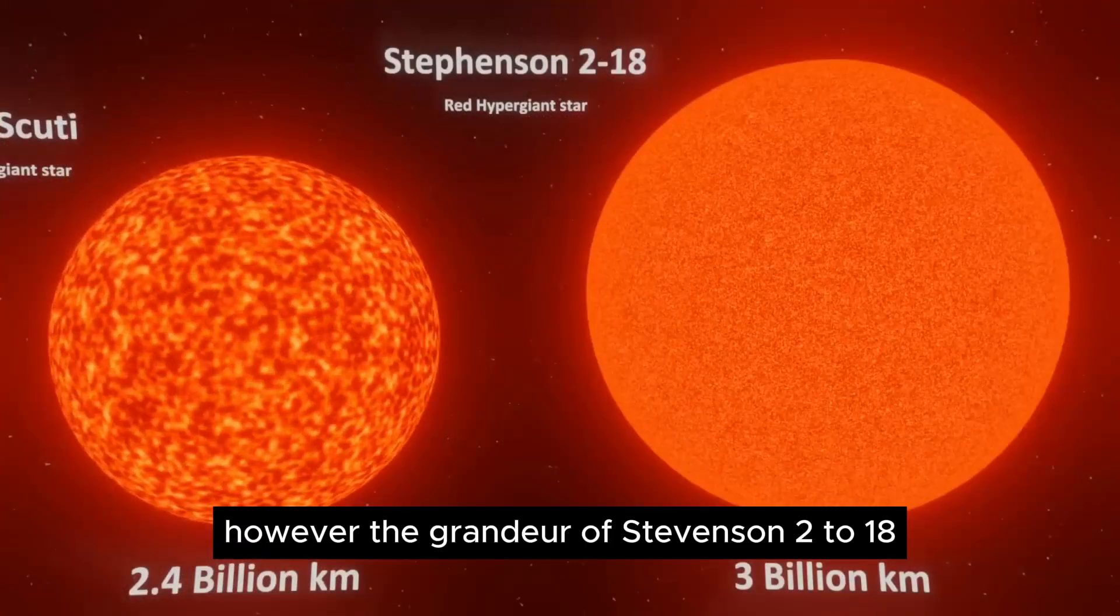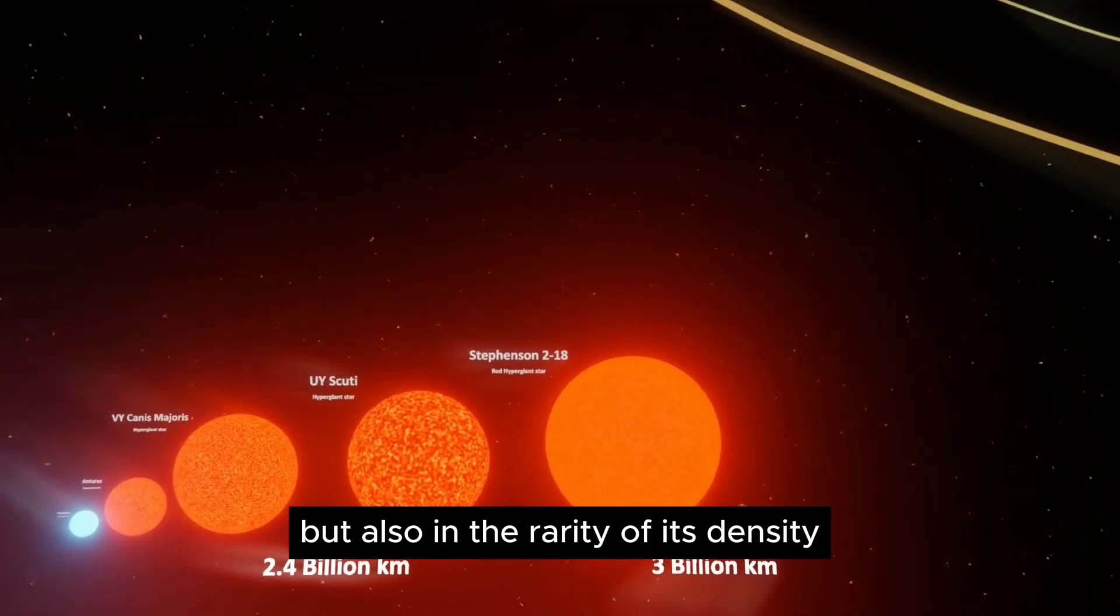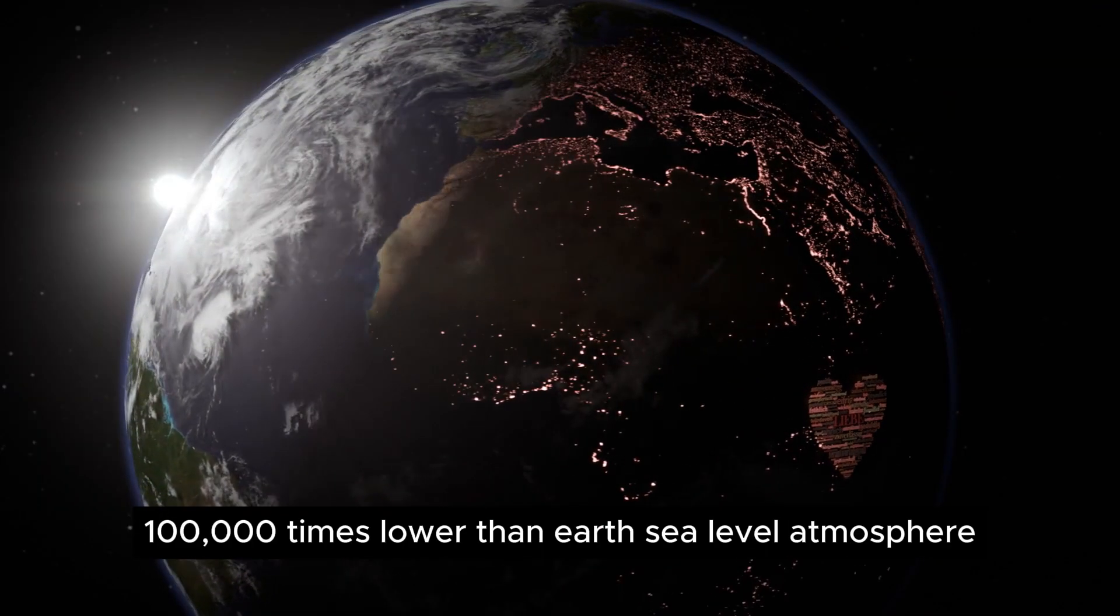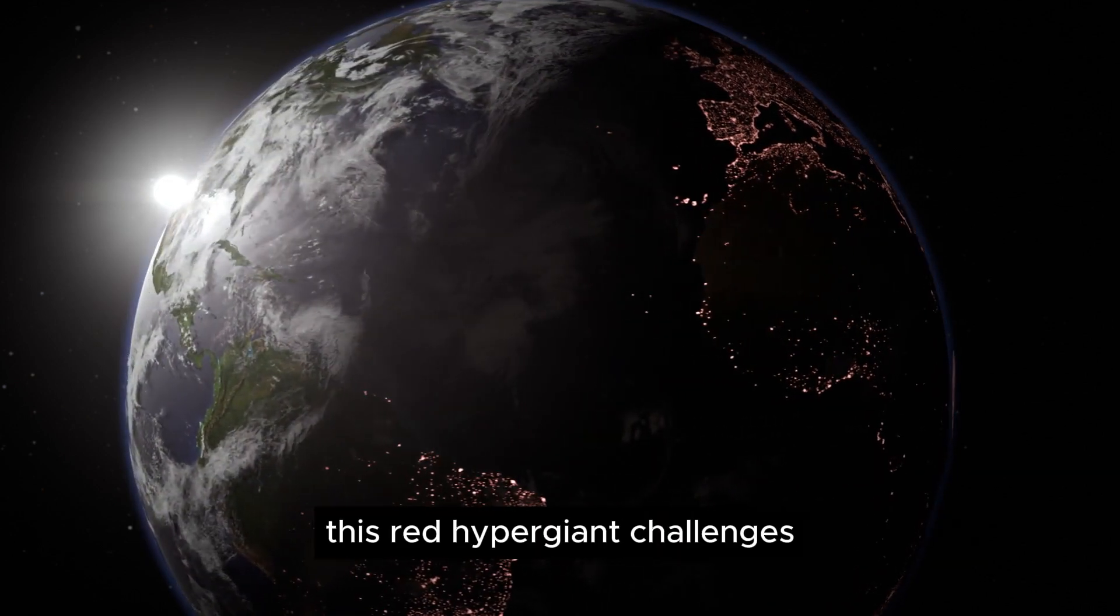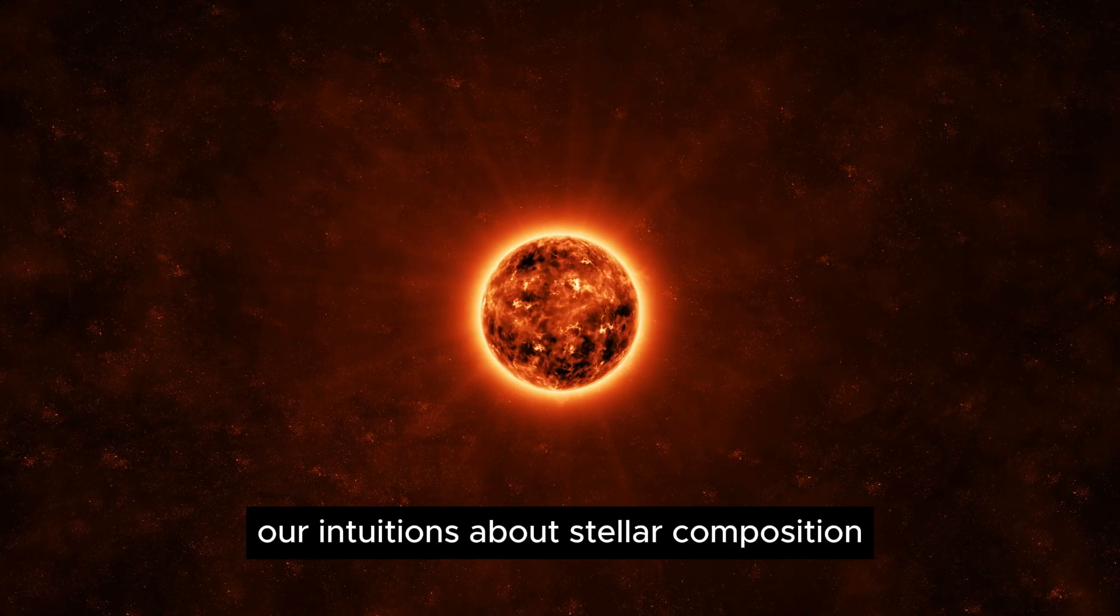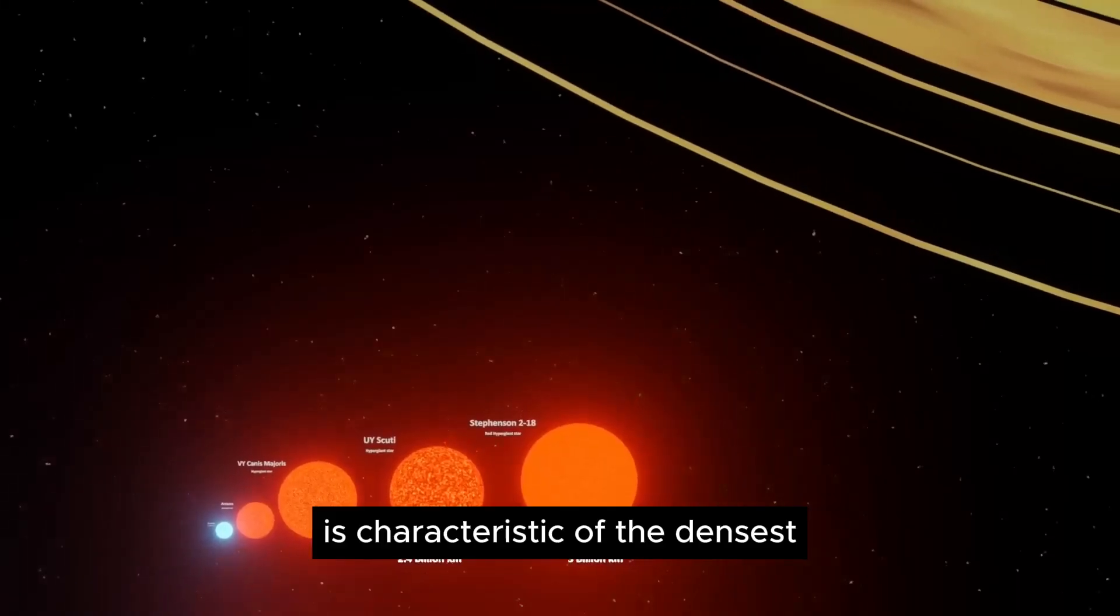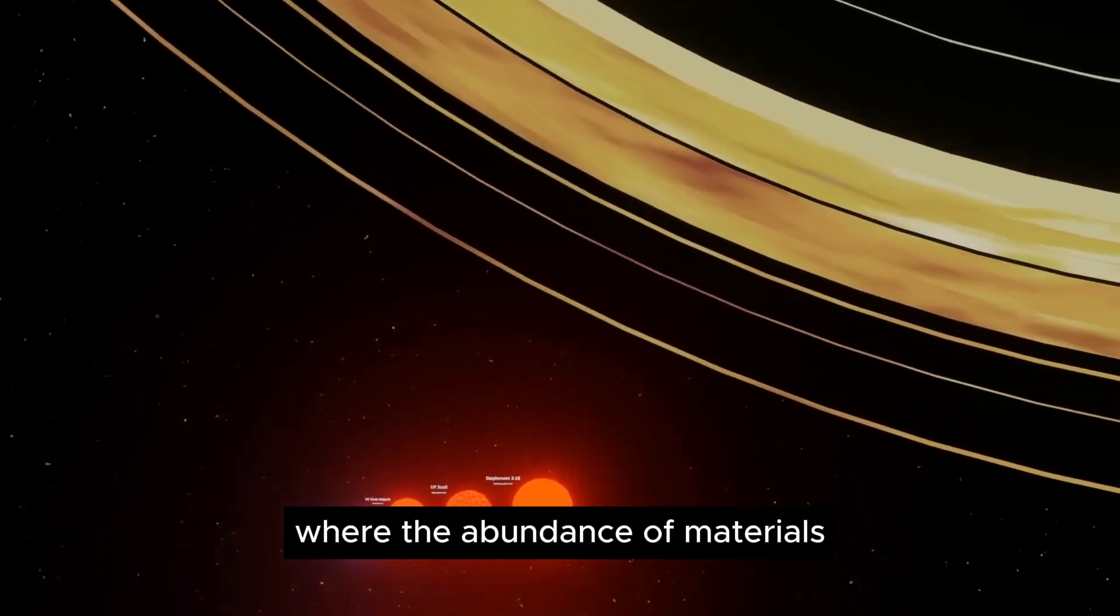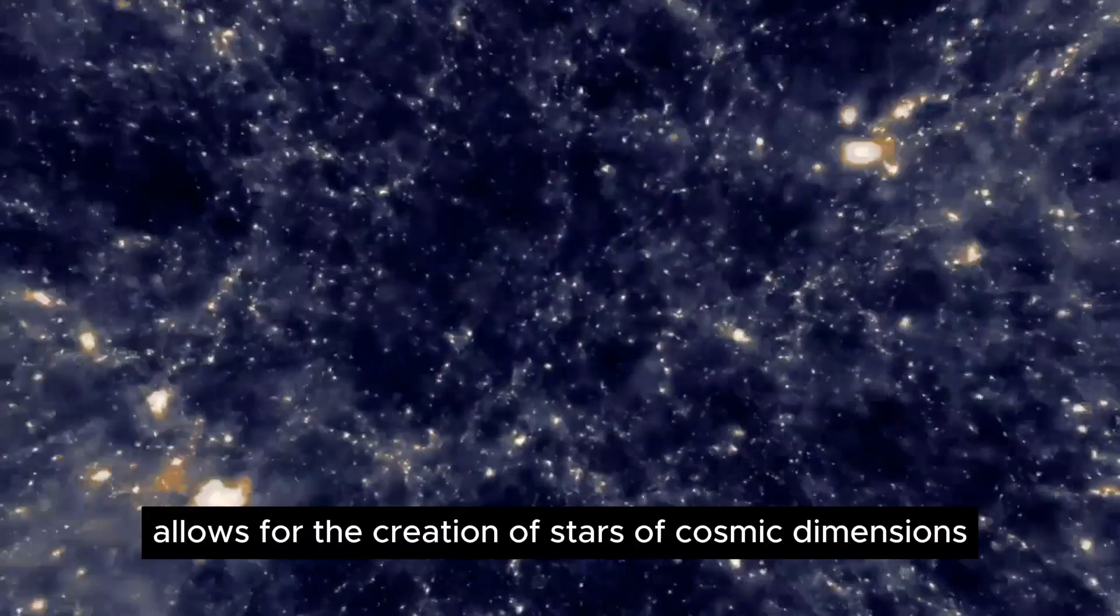However, the grandeur of Stevenson 2-18 not only lies in its striking size, but also in the rarity of its density. With an approximate density 100,000 times lower than Earth's sea-level atmosphere, this red hypergiant challenges our intuitions about stellar composition. Its extraordinarily rarefied matter is characteristic of the densest and most massive star-forming regions, where the abundance of materials allows for the creation of stars of cosmic dimensions.